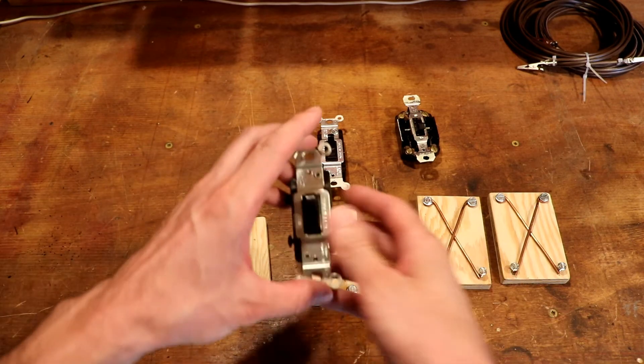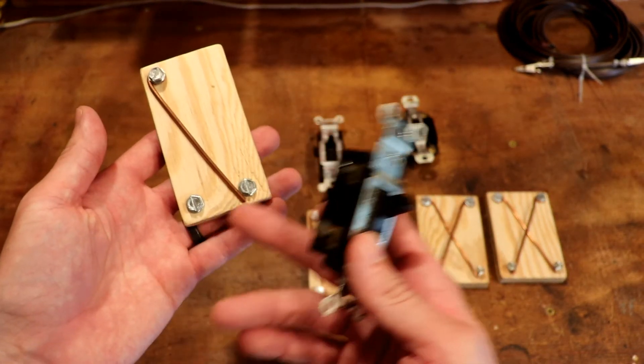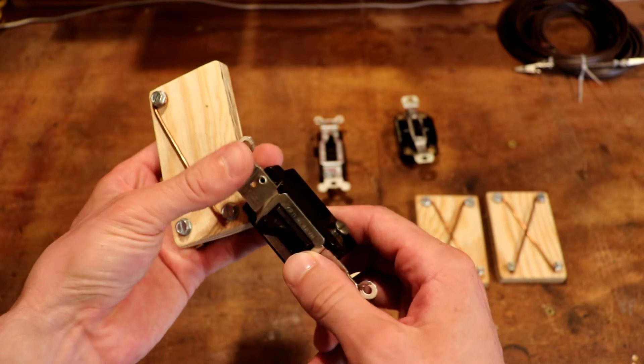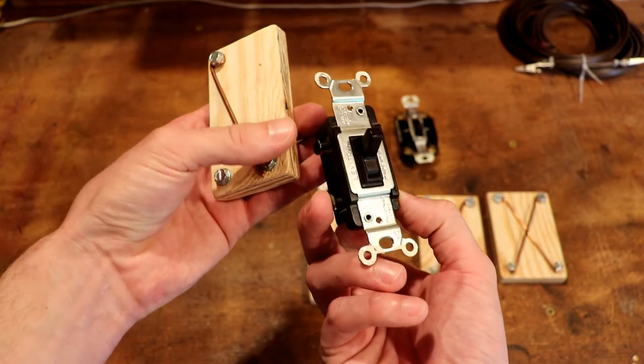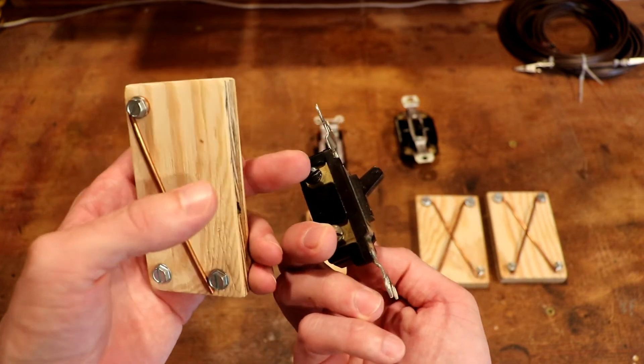Here we have some actual three and four-way light switches. Let's compare them to our models. Just as the model shows, there's two lugs on the bottom, one on the top. Here we have a lug on the bottom, another lug on the bottom, and one on the top here. The top one is always going to be the common lug.